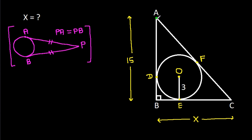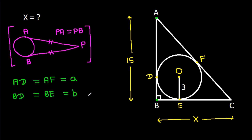So from point A, AD will be equal to AF — call this value 'a'. From point B, BD will be equal to BE — call this value 'b'. And from point C, CE will be equal to CF — call this value 'c'. So AD = AF = a, BD = BE = b, CE = CF = c.